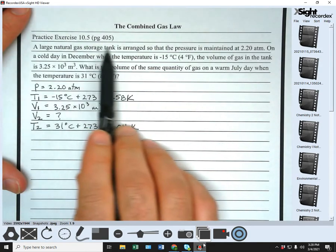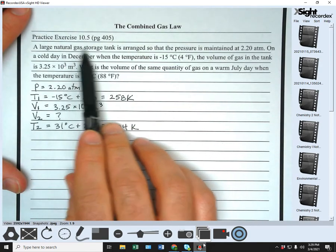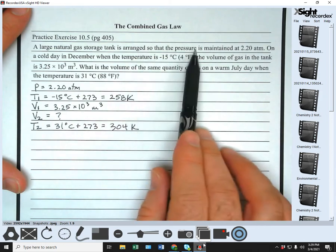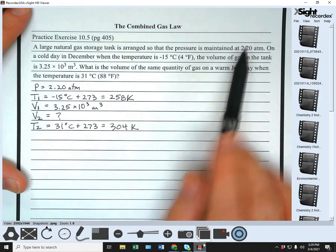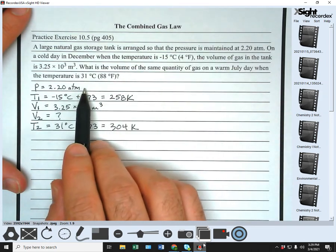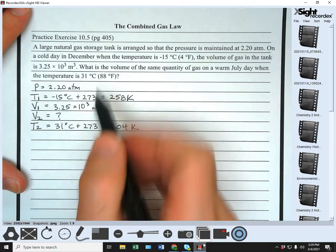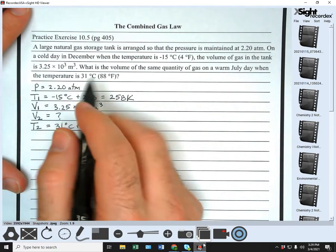So if we look back and see what it says here, a large natural gas storage tank is arranged so the pressure is maintained at. So that means the pressure stays constant.